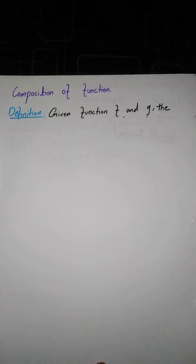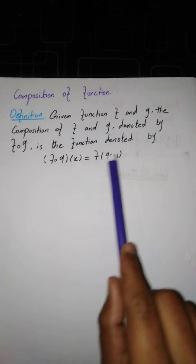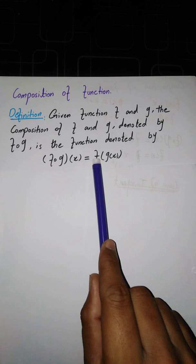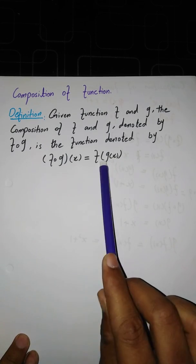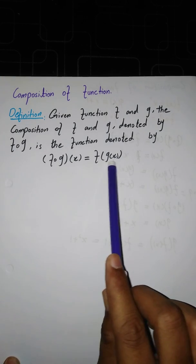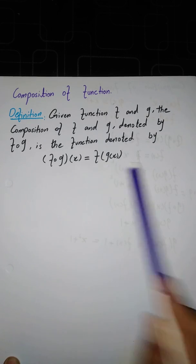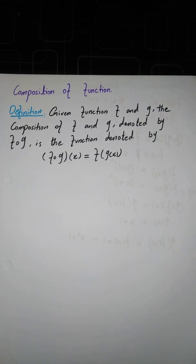In this video I will discuss the composition of functions. Given functions f and g, the composition of f and g, denoted f∘g, is a function defined by (f∘g)(x) = f(g(x)). This means we substitute a function in place of our independent variable — we replace the independent variable with another function. That is the definition of composition of functions.